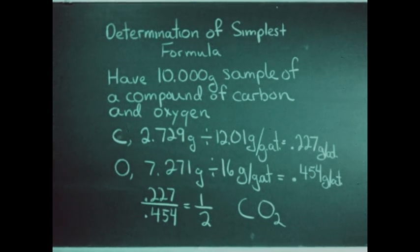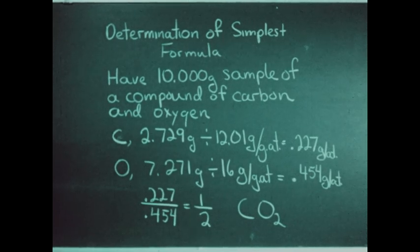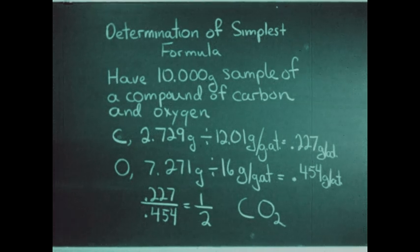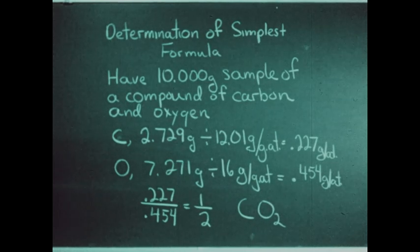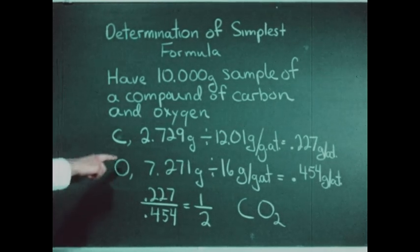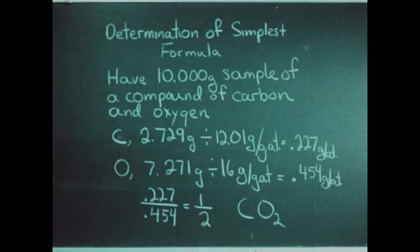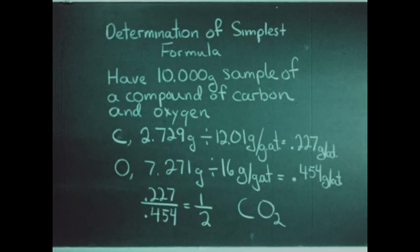In order to write the formula, however, we need to know the ratio in which the two elements combine by atom. To convert the weight ratio to an atom ratio, we need to know the atomic weight of the elements. A consultation with the table of atomic weights tells us that carbon has a weight of 12.01 and oxygen 16. Dividing 2.729 grams of carbon by 12.01 grams per gram atom, we find we have 0.227 gram atoms of carbon.